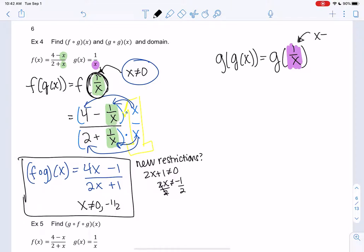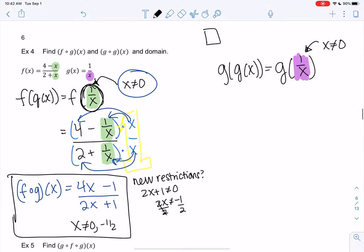So any domain restrictions before we move on? Yeah, x can't be 0. So we're going to start with x. We're going to input it into 1 over x, right? 0 has been eliminated. There is no 0.